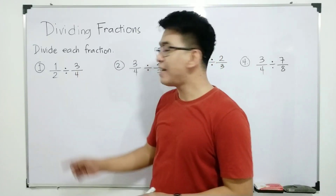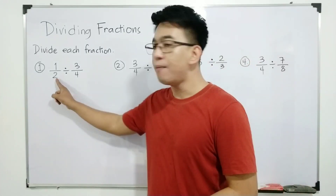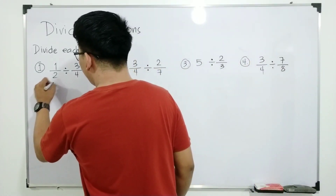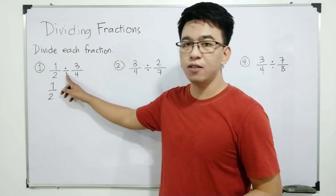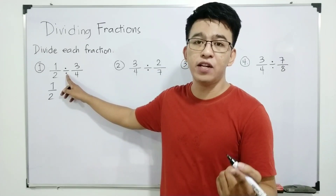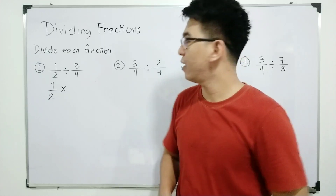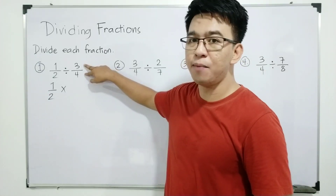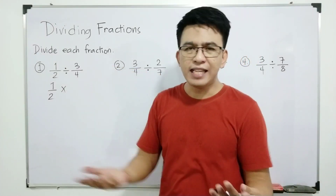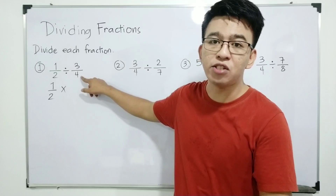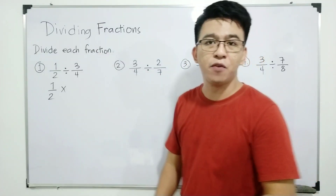Now let's start with item number one: one half divided by three over four. The first step is to copy the first fraction — we have one over two. The second step is to change the operation from division to multiplication. Step three: get the reciprocal of your divisor, which is three over four. To get the reciprocal, you just interchange the position of the numerator and denominator.